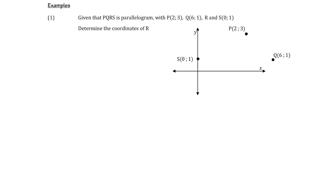In this second video, we're going to look at some examples of how we can use our knowledge of the quadrilateral hierarchy to solve problems in analytical geometry. The first question says: given that PQRS is a parallelogram, they give you the coordinates of P, Q and S, but leave R off the sketch, and ask you to determine the coordinates of R.